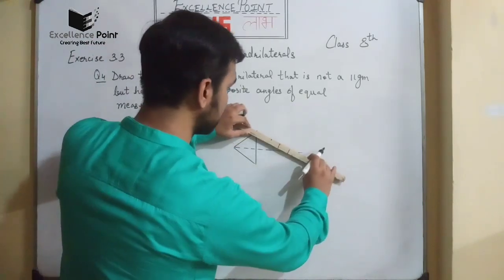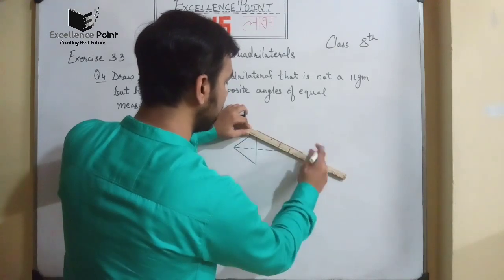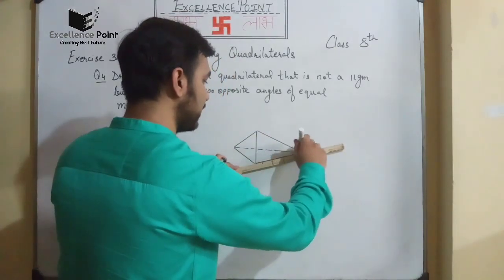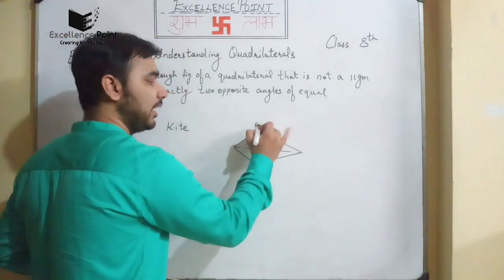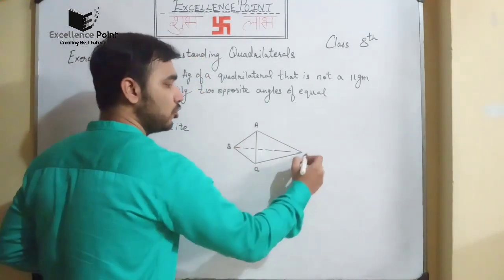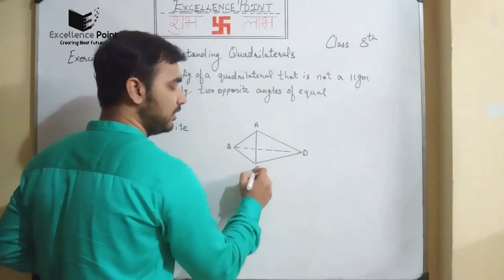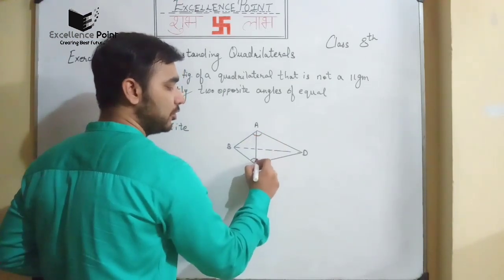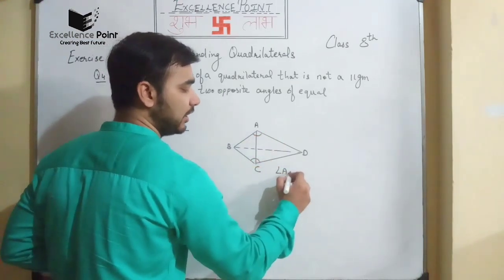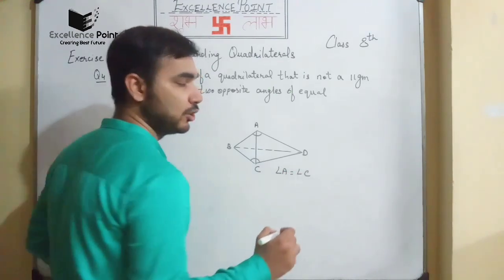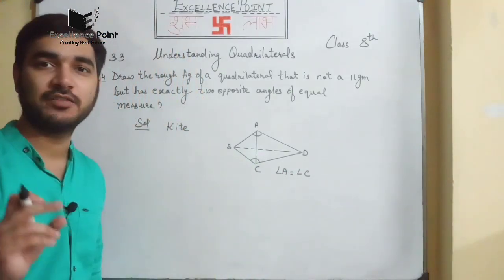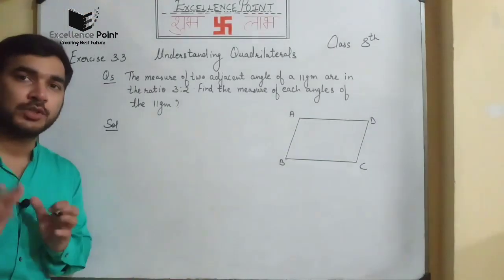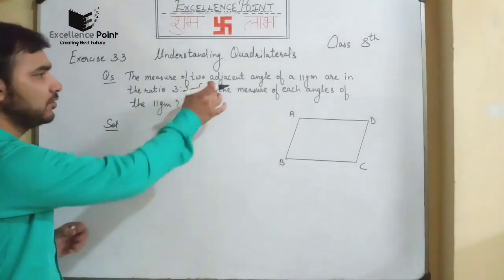A kite may look like a rhombus but it is not a rhombus. If we mark ABCD on the kite, we can say that angle A should always be equal to angle C. So the answer is a kite figure. We will now move towards question number five.